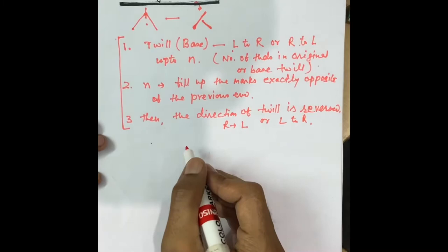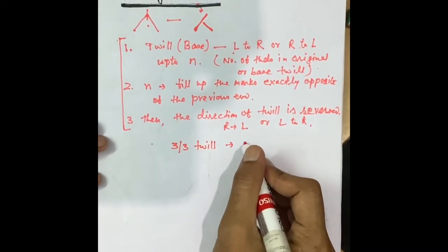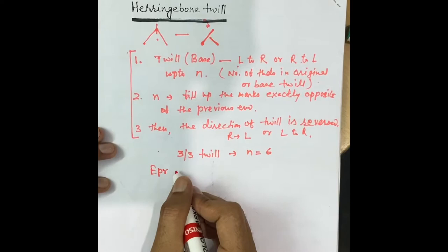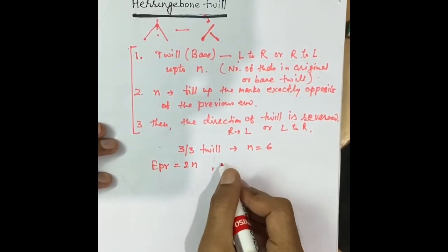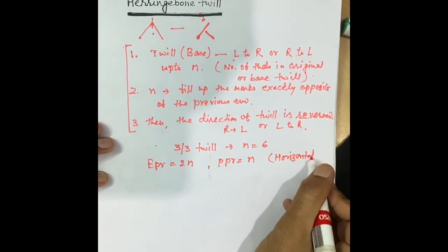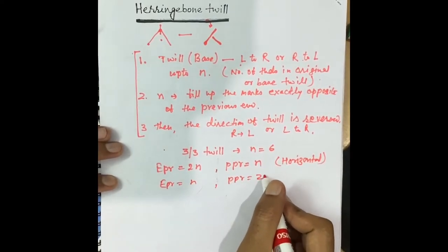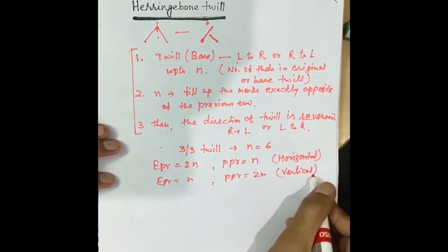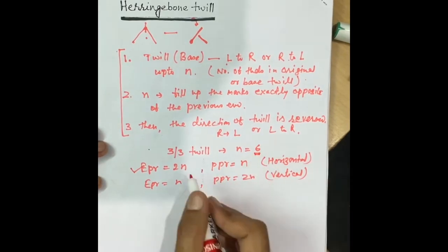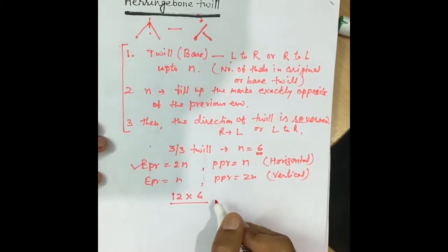To understand this with an example, I am taking a base twill of 3 up 3 down. This means n equals 3 plus 3, which is 6. For a horizontal herringbone effect, EPR equals twice n (so 12) and PPR equals n (so 6). For a vertical effect, EPR equals n and PPR equals twice n. So the design size will be 12 cross 6.